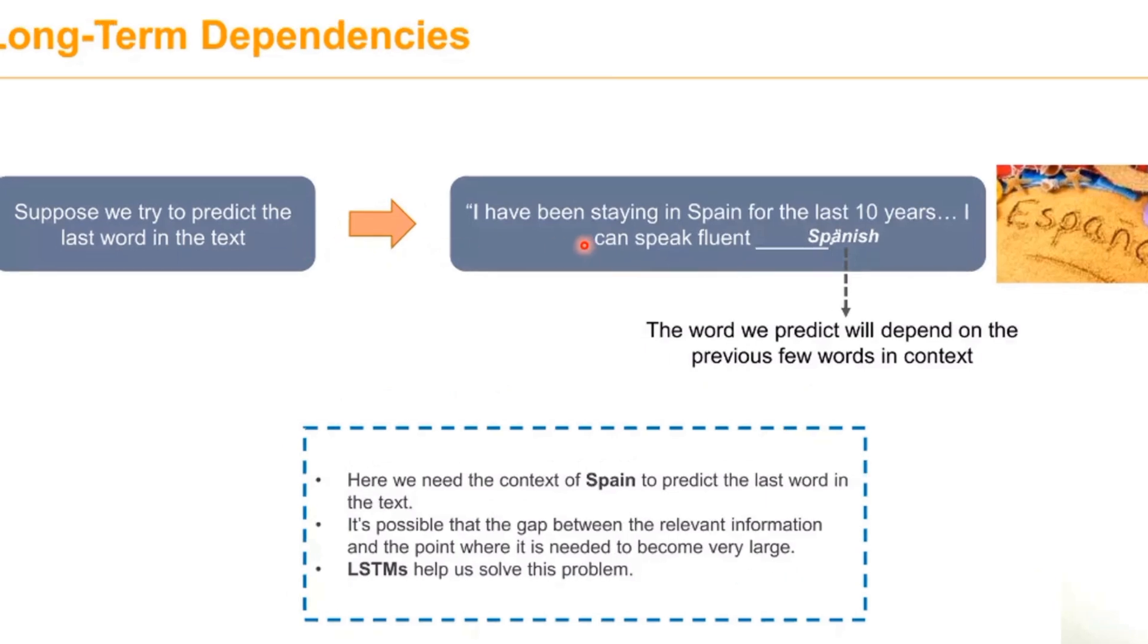Another example: 'I have been staying in Spain for last 10 years, so I can speak fluent Spanish.' Here we need the context of Spain to predict the last word.